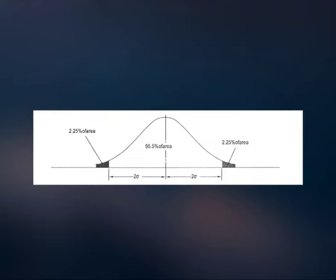One more example to reinforce our point. Look at the two normal probability distributions in the figure. Each has a different mean and a different standard deviation. The colored area under both curves, however, contains the same proportion of the total area under the curve. Because both colored areas fall within two standard deviations plus and minus from the mean. Two standard deviations plus and minus from the mean include the same proportion of the total area under any normal probability distribution.